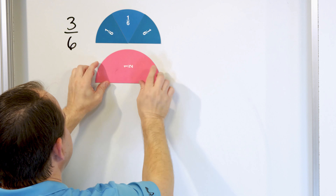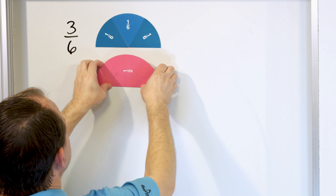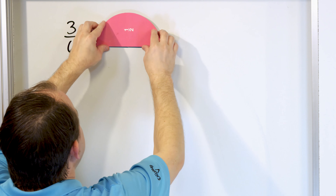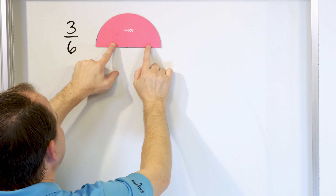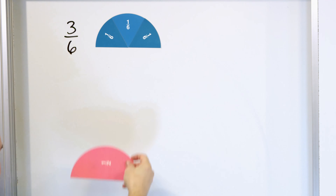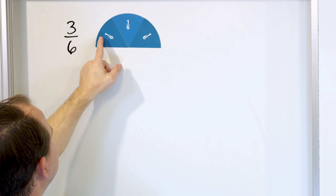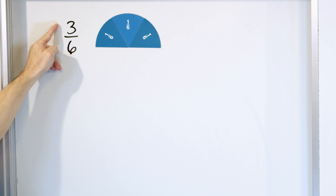In fact, I can hold up the fraction one-half, and they look and they are exactly the same thing. So we can see from these magnets that the fraction one-half of a pizza is exactly the same as three-sixths.